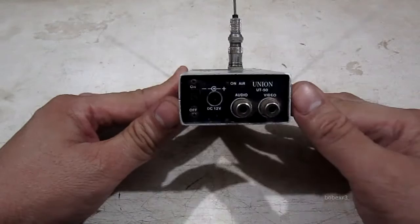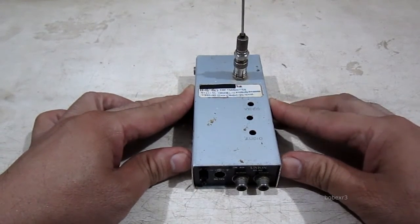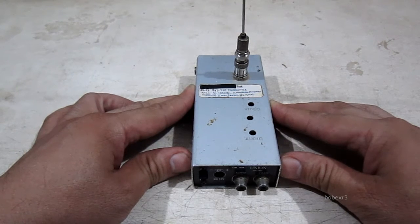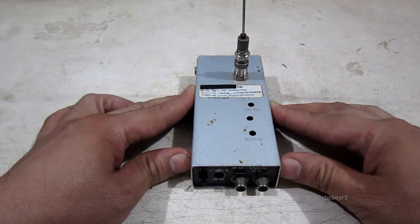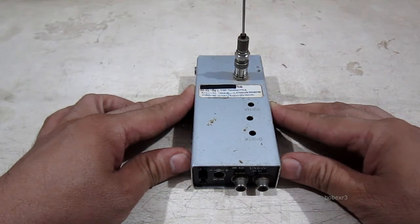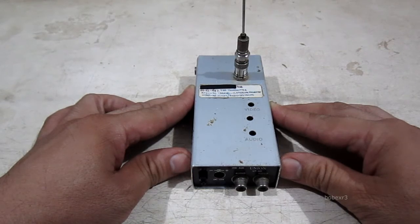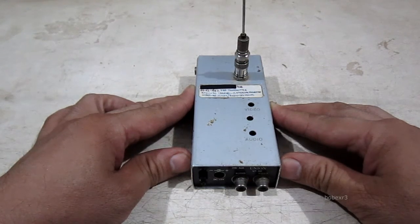This transmitter transmits in analog system M for NTSC on channel 11 around 200 megahertz. According to its manual, it has a range of more than 100 feet or more than 30 meters.